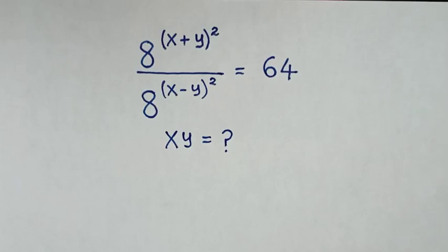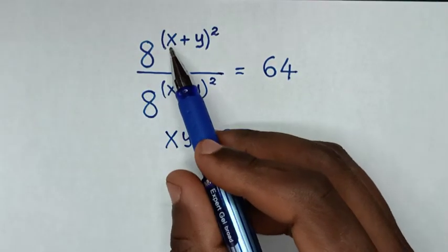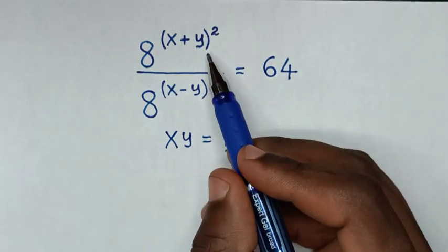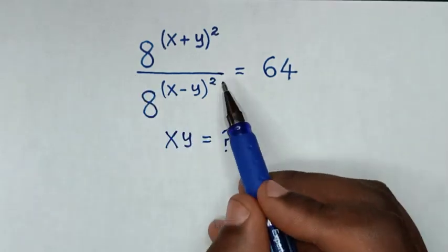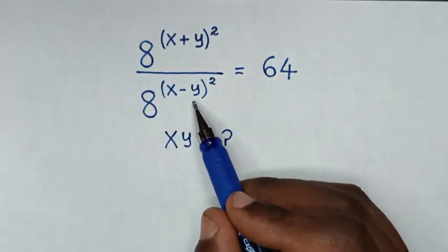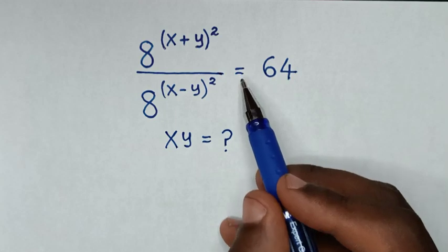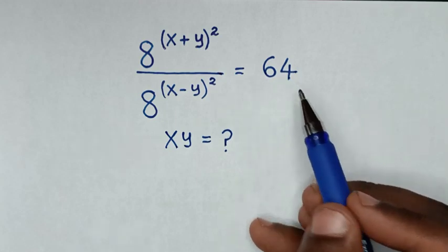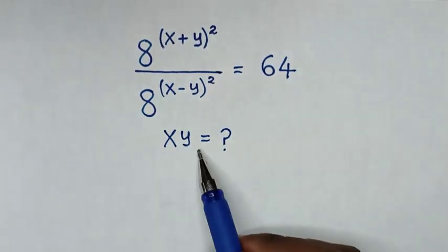Hello. How to solve 8 power of (x+y)² over 8 power of (x-y)² is equal to 64, to find the value of xy.